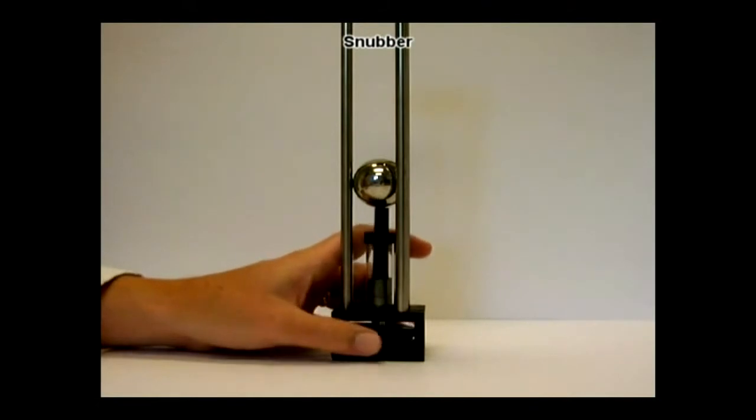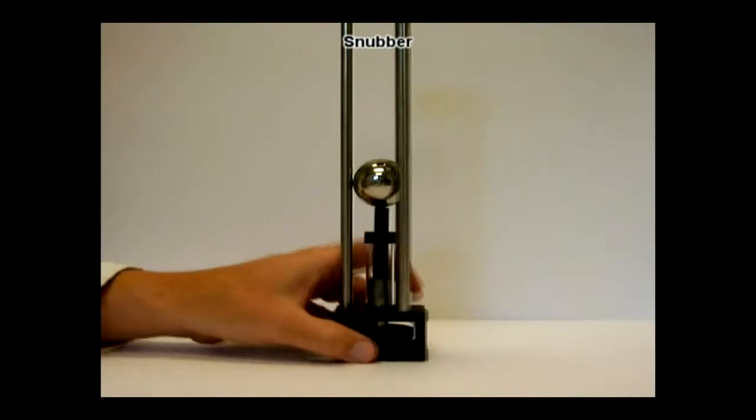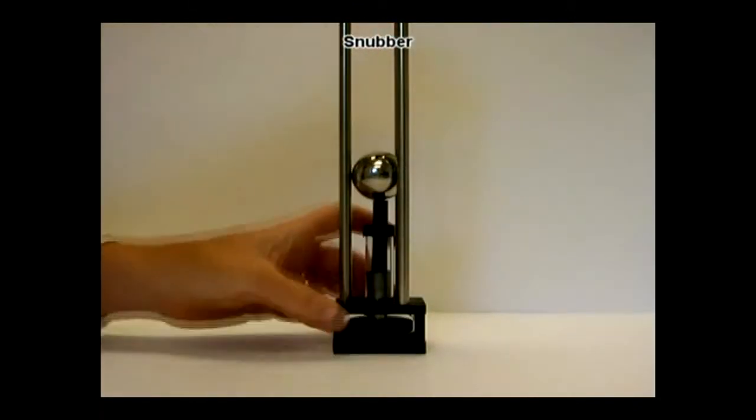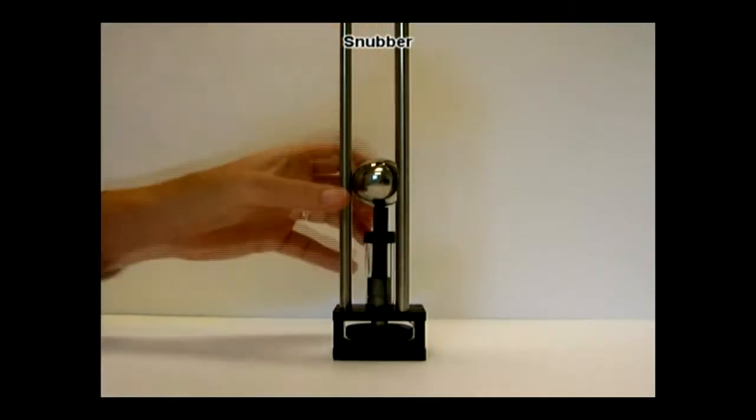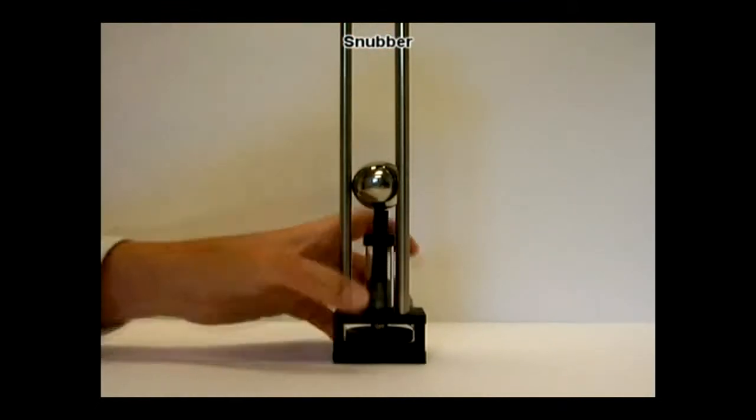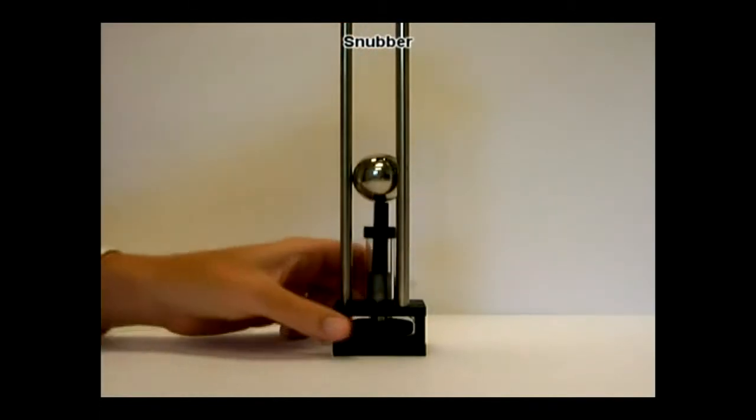Now I'm going to turn down the damping so you can see what it would be like if there were no snubber. You can see it lands much more violently and the ball bounces when it's under-damped.